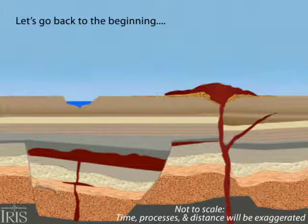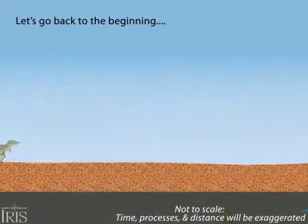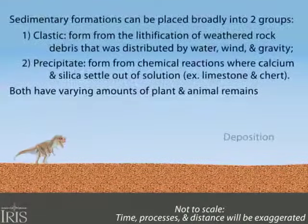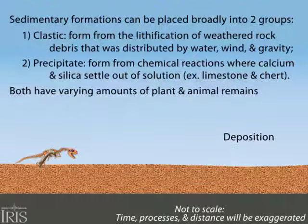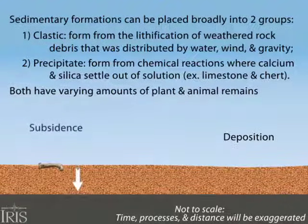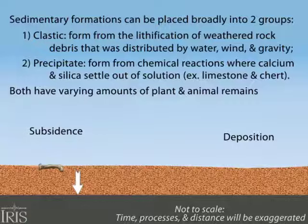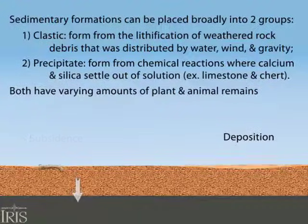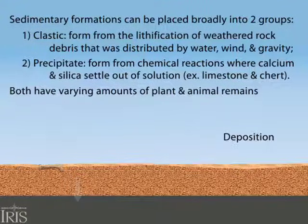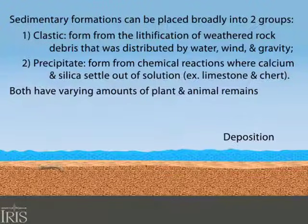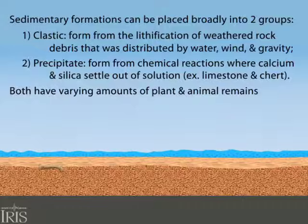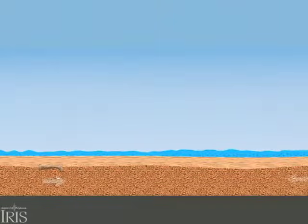We'll start with a layer of undeformed, slowly subsiding bedrock that gets drowned by a broad sea. Most sedimentary rock is produced by two broad processes. First, by the accumulation of weathered rock debris that was distributed by water, wind, and gravity. Second, though less abundant, rock is produced by precipitation, which is a chemical reaction where calcium carbonate and or silica settle out of solution, forming limestone or chert. Both processes result in sedimentary rock strata with varying quantities of organic matter.